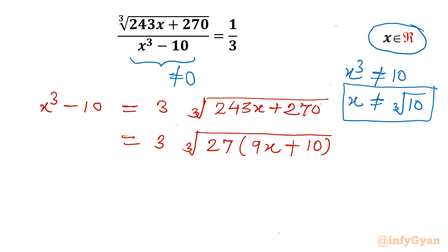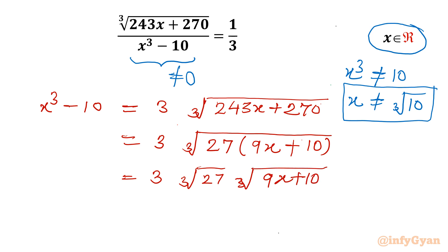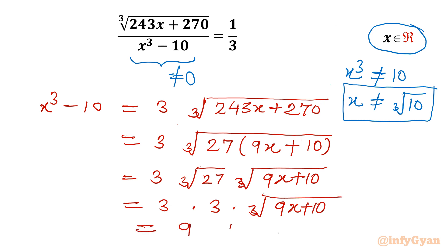Now I will use the property that cube root of a times cube root of b equals cube root of ab. So I can split this as cube root of 27 times cube root of (9x + 10), which gives us 3 times cube root of (9x + 10). So the right-hand side becomes 9 times cube root of (9x + 10).